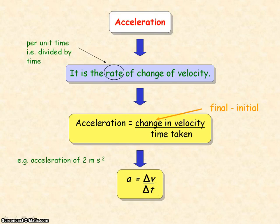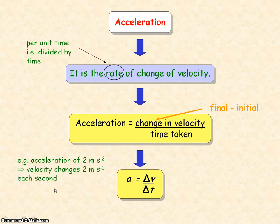If we have an acceleration of 2 meters per second squared, that means we have a change in velocity of 2 meters per second each second.